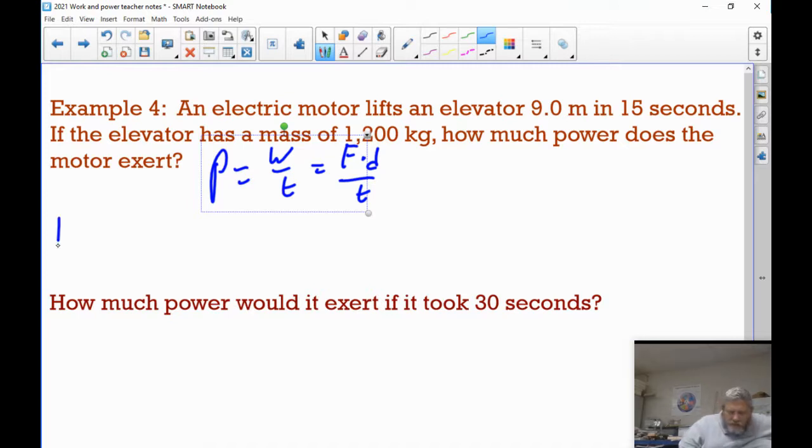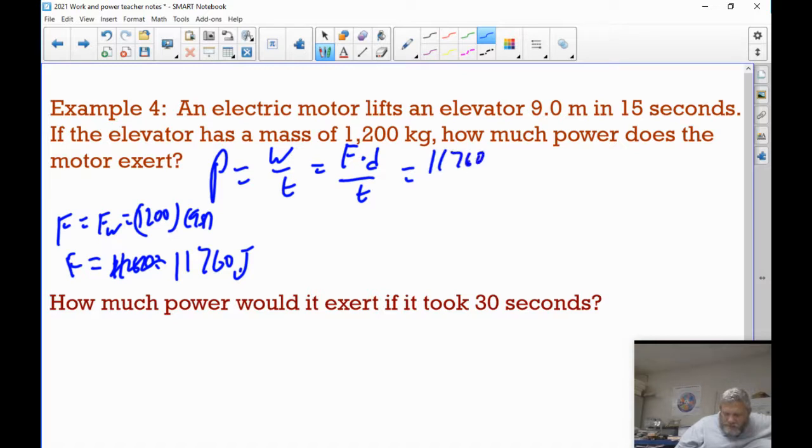So, the force here is going to be the weight, which is going to be mg, 1,200 times 9.8, or 11,760 joules. So, we can say the force is 11,760 times the d, which is 9 meters over 15 seconds. And we just multiply that together, 9 divided by 15, we get 7,056 watts.